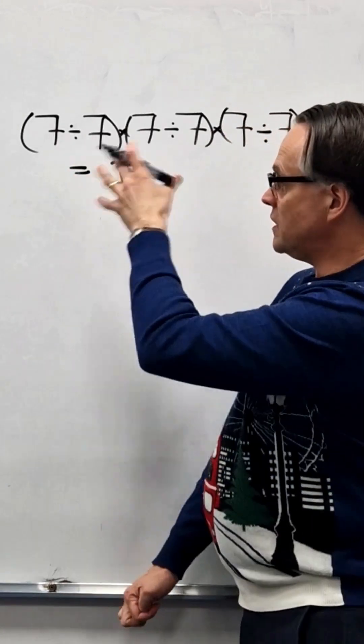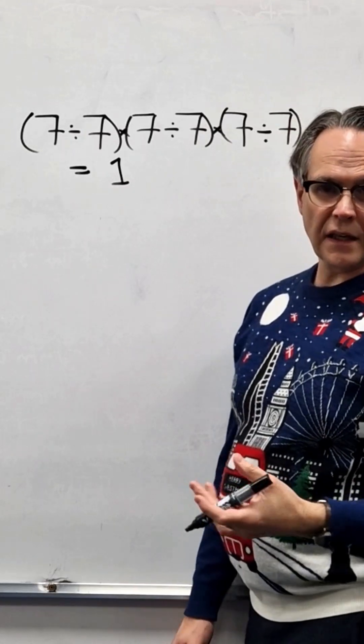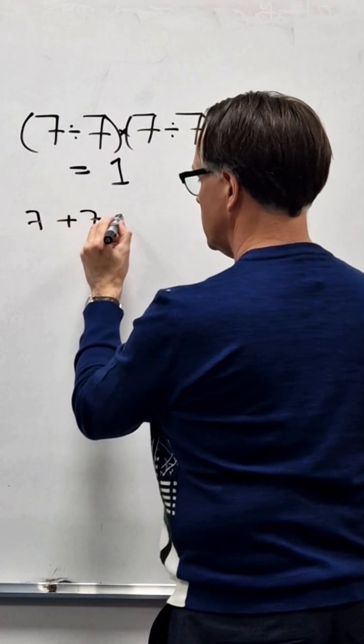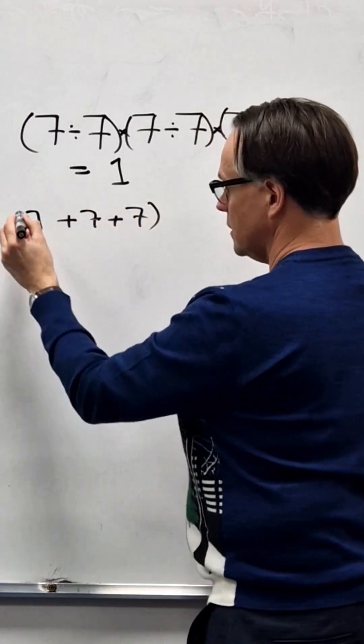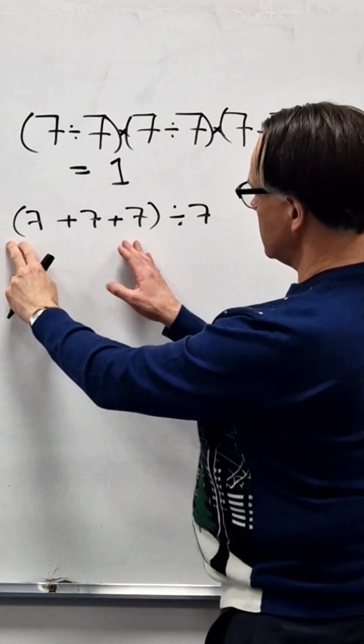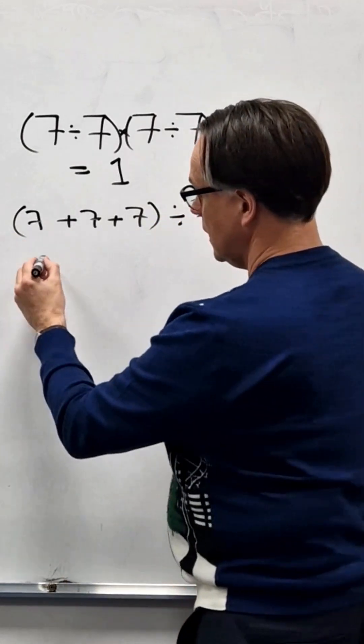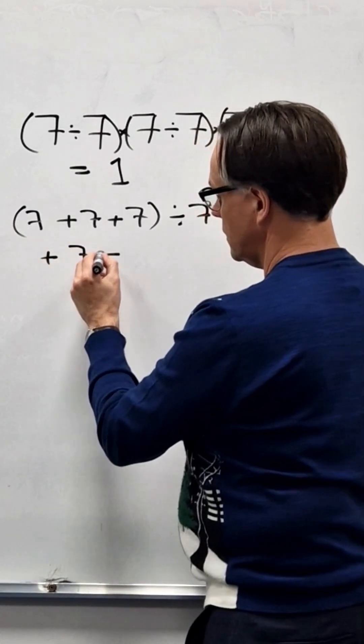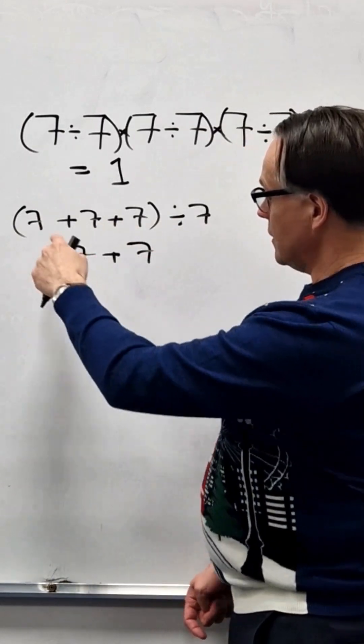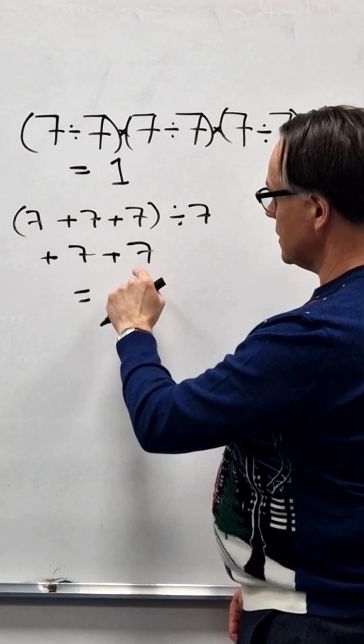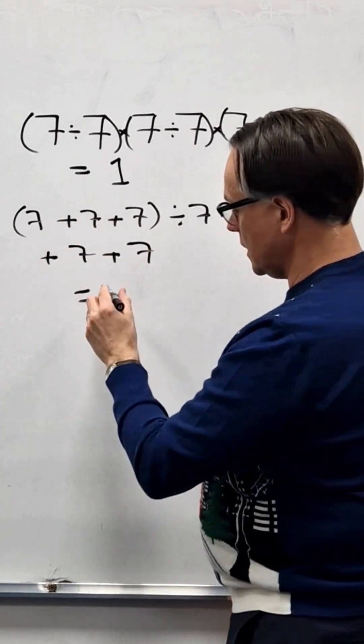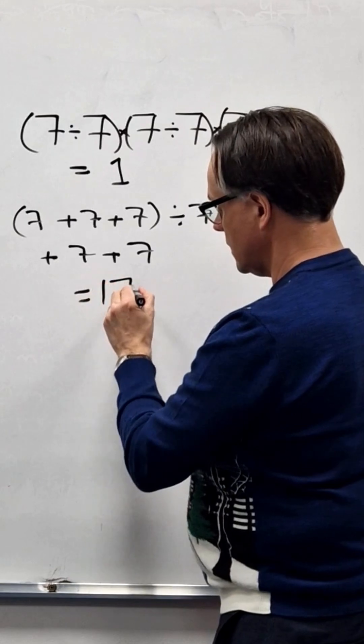Now by putting different signs in there we can make different numbers. For example, if I put 7 plus 7 plus 7 divided by 7, that's three sevens divided by 7, that's 3, and I put plus 7 plus 7. Then I've used 6 sevens: 1, 2, 3, 4, 5, 6. And that's 21 divided by 7 is 3, plus 14, that makes 17.